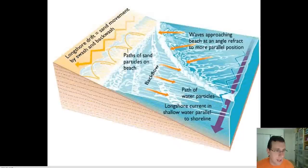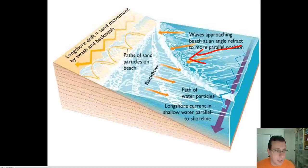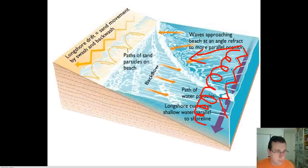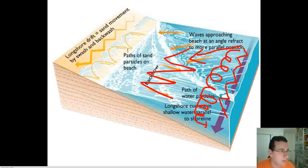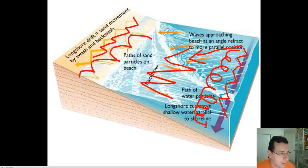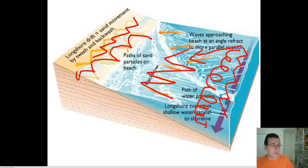Whenever waves approach the beach at an angle — and yes, they do reorient themselves somewhat but not entirely — you still get the undertow and backflow underneath, but you create an overall pattern of zigzagging water molecules. What it feels like is that the water takes a step to the side and then a step back, over and over. The same thing happens to the sand as the water hits it, so the actual path of the sand looks like a zigzag. You end up with regular cusps where the sand is basically being dragged sideways by these longshore currents.